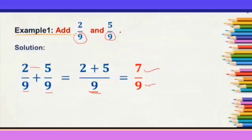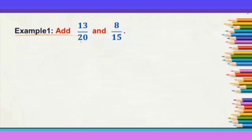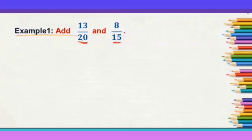How do we add when the denominators are different? Look at an example here. We need to add 13 by 20 and 8 by 15. Here the denominators are different, so you cannot add the fractions as they are. You have to change the denominator into like fractions — you have to make the denominators the same. To do that, we will have to find the LCM of 20 and 15.